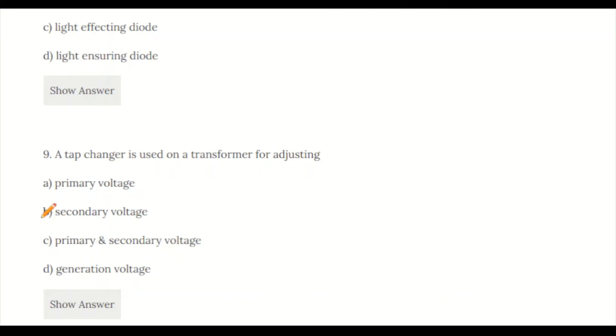Question 9: A tap changer is used on a transformer for adjusting: a) primary voltage, b) secondary voltage, c) primary and secondary voltage, d) generation voltage. The correct answer is B, secondary voltage.